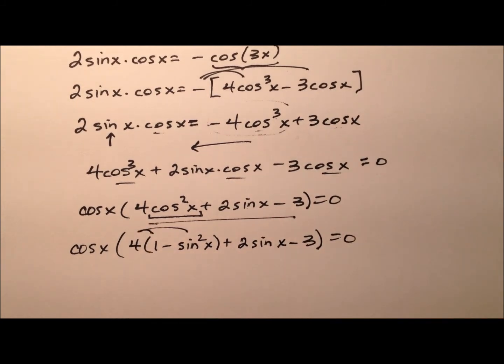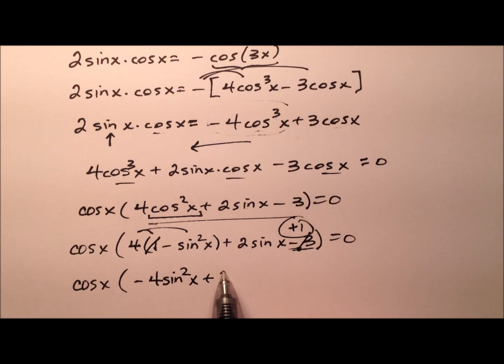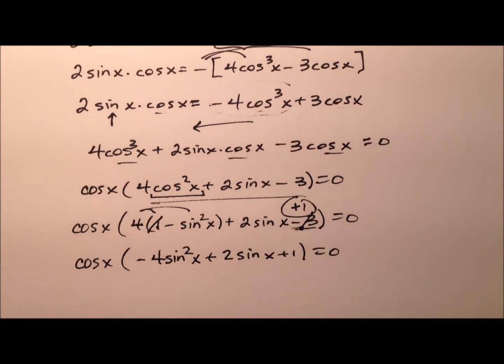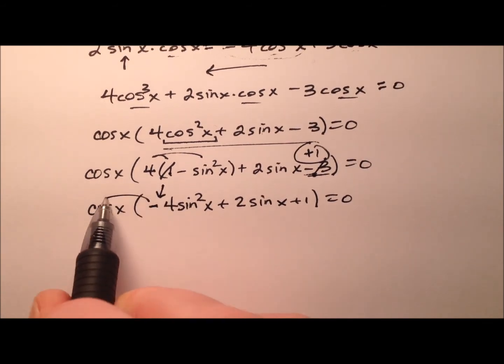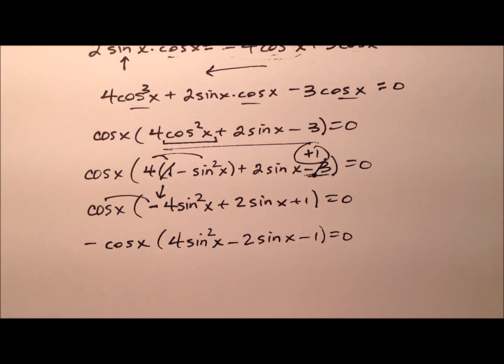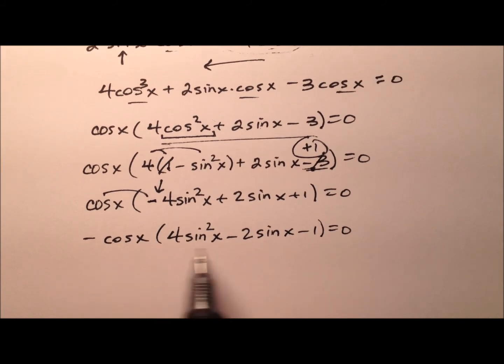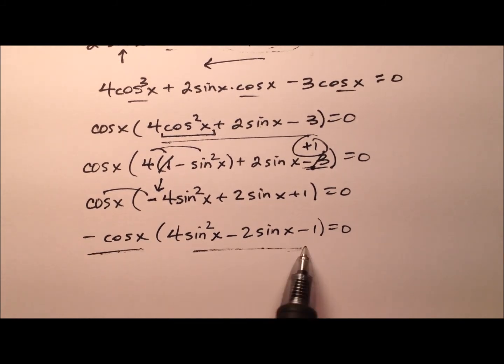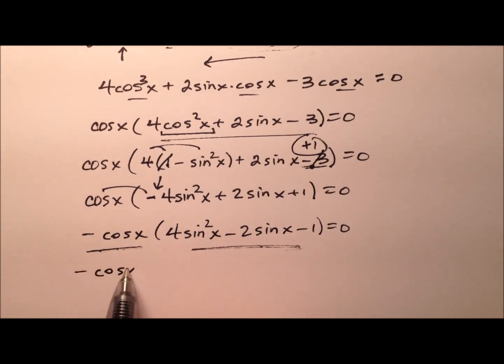And then when we distribute that 4 through there, we have the cosine out front. 4 times 1 is 4, and then we have minus 3. So ultimately, that's going to be a plus 1 here at the end. And we have negative 4 sine squared x plus 2 sine x plus 1. And the last thing I'm going to do, I don't like this leading negative here, so I could factor that negative out and just put it out there with the cosine x that's already there. So 4 sine squared x minus 2 cosine x minus 1 whenever I factor that negative out. So it looks like we have kind of some factored form where I have this factor times this factor equals zero. So what I can do is set each factor equal to zero and solve.